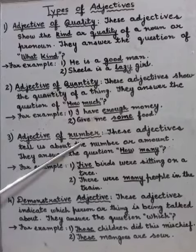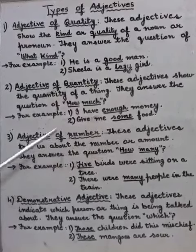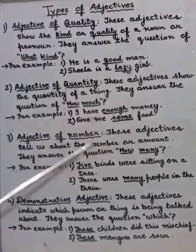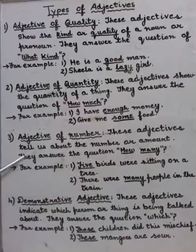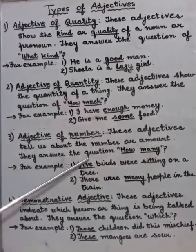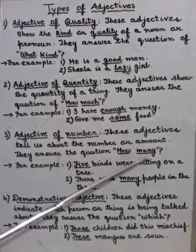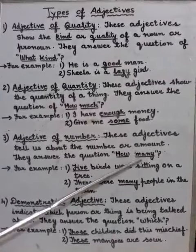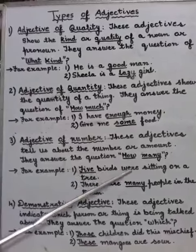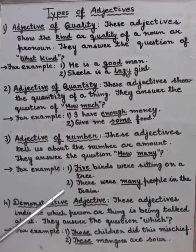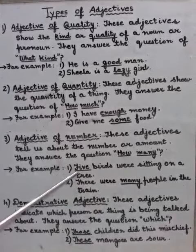3. Adjective of number. These adjectives tell us about the number or amount. They answer the question how many? For example, five birds were sitting on a tree. How many birds were sitting on a tree? Five.